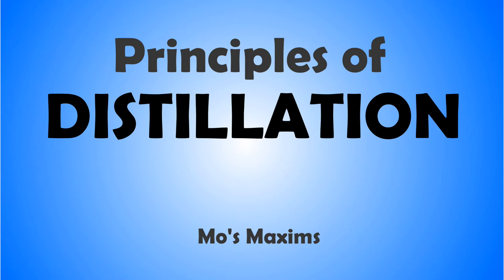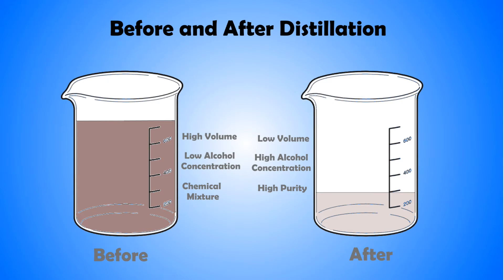Distillation is the name for a process used to separate liquids into their component chemicals. It involves the vaporization of one or more components of a mixture, followed by their collection. In a generic distillation reaction, the reactant is a mixture of many chemicals, often of low concentration, and the product is a high concentrate of only one or a few of these chemicals. Distillation is used in many industries, including chemistry, manufacturing, and the production of homemade alcohol.